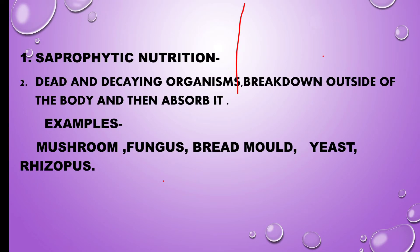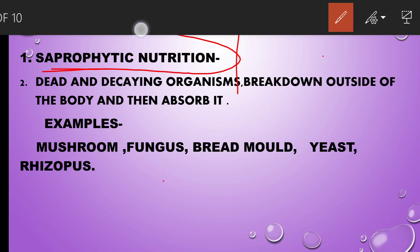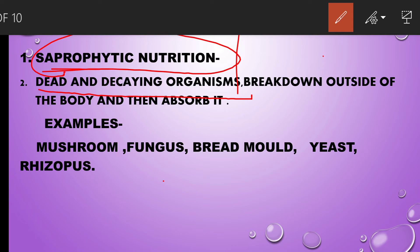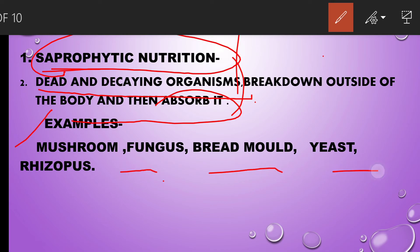The first type is saprophytic nutrition. Organisms following this are called saprophytes. Saprophytes depend on dead and decaying organisms for their food and are the natural cleaners of the earth. They decompose dead matter and mix it into the soil. The food material is broken down outside the body and then absorbed by the saprophyte. Examples include mushrooms, fungus, bread mold, yeast, and rhizopus.